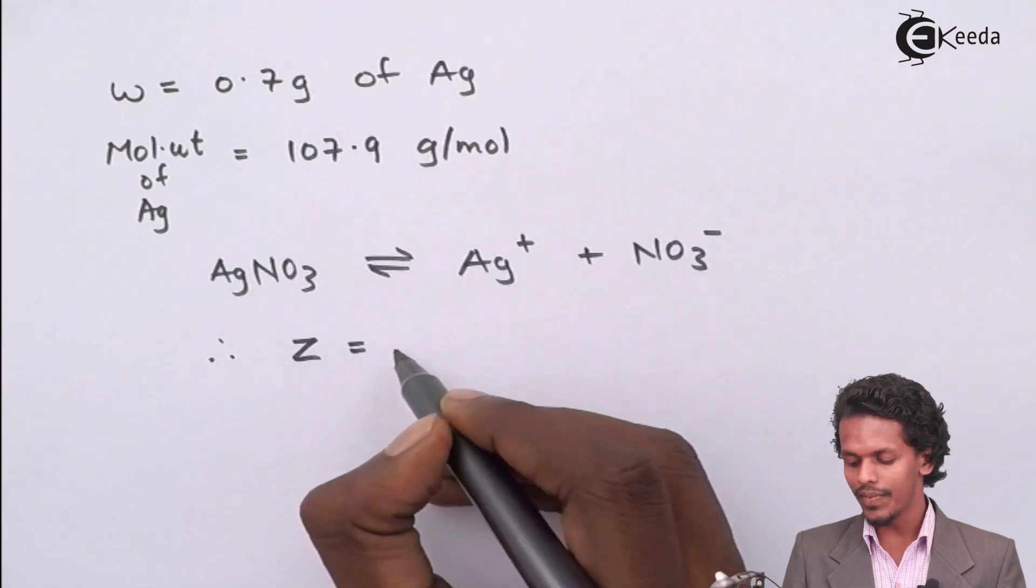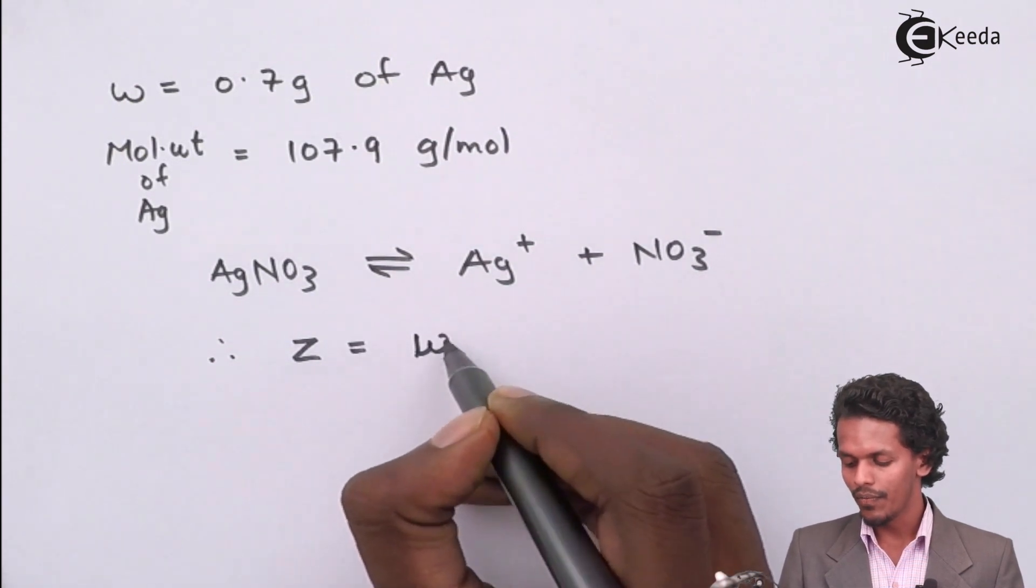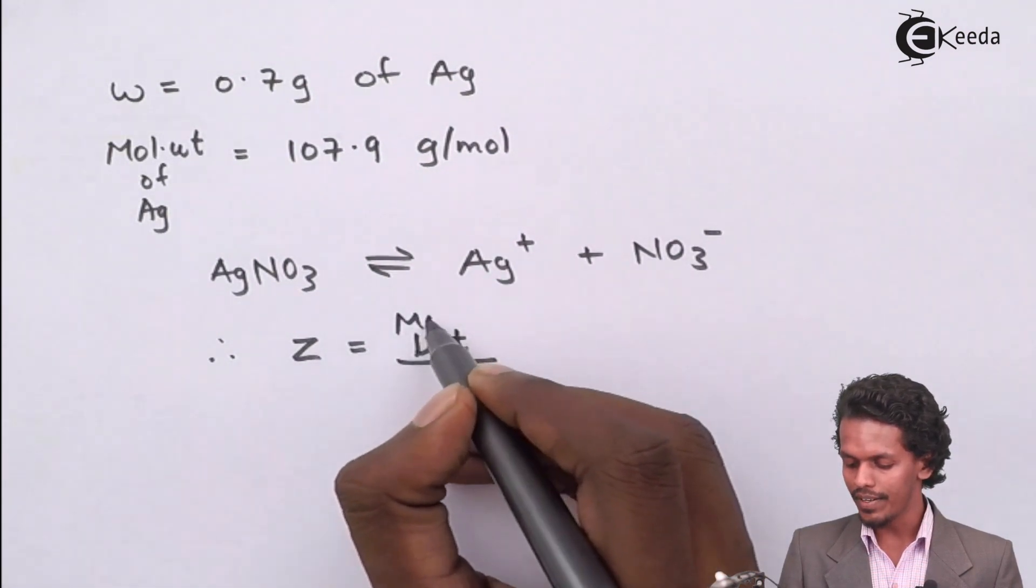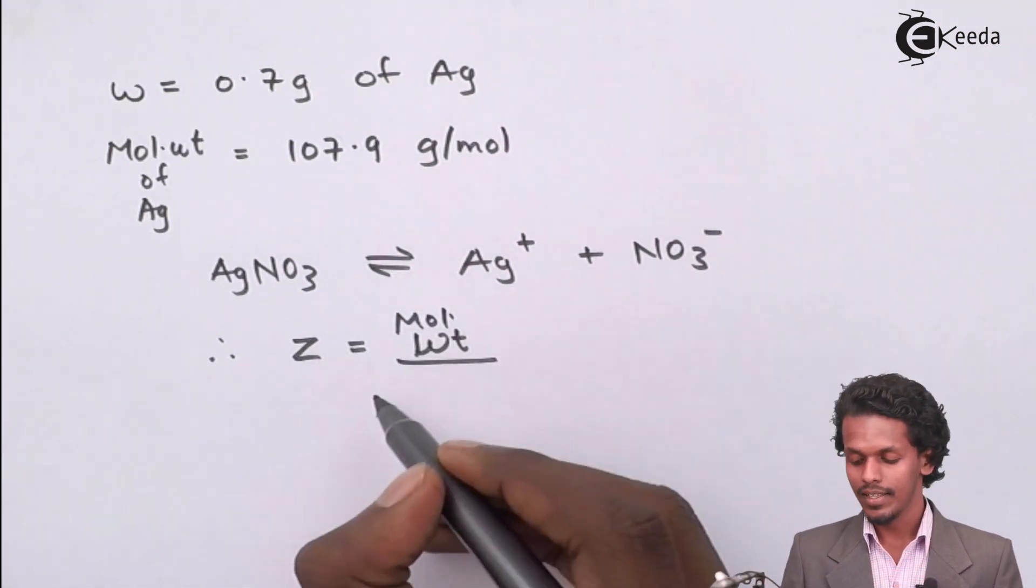Therefore, z, that is equivalent weight, is nothing but molecular weight divided by valency.